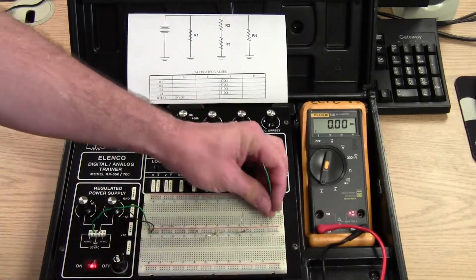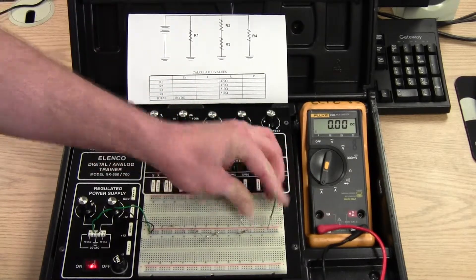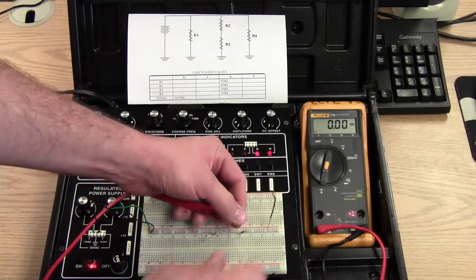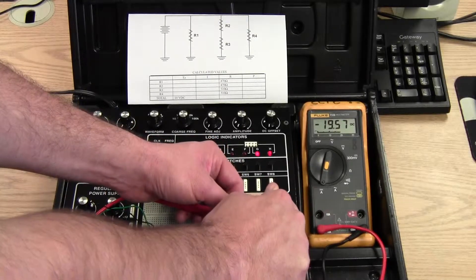And then finally the current through R4. Remove one end. Insert my spare wire. Go from the resistor to the spare wire. And I get 19.56 milliamps.